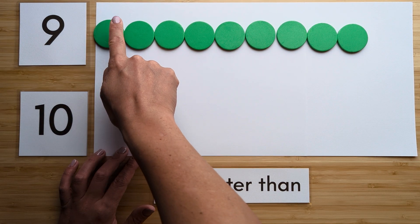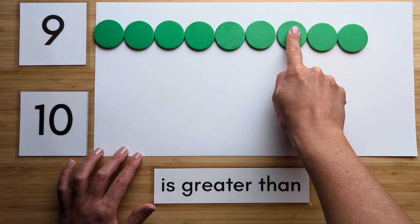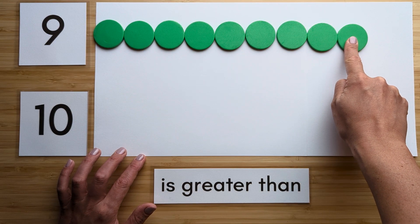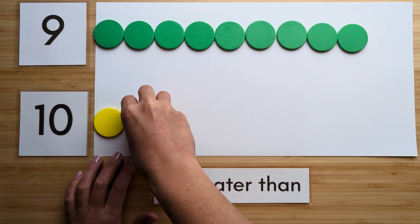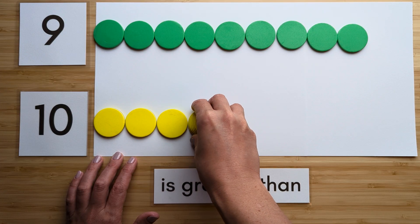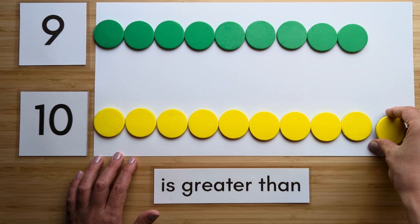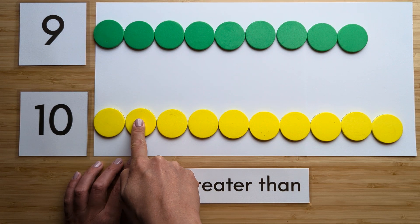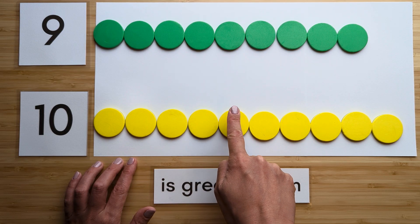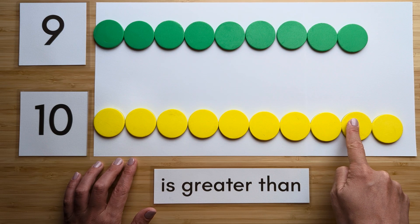One, two, three, four, five, six, seven, eight, nine. Make the number ten. Point and count: one, two, three, four, five, six, seven, eight, nine, ten.